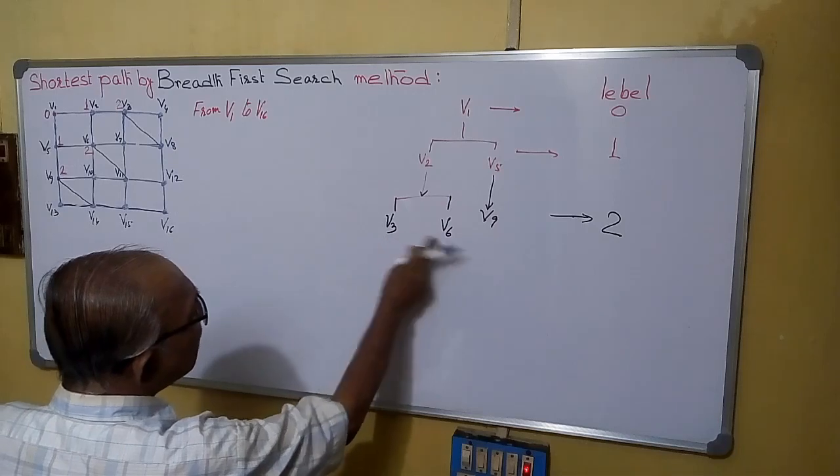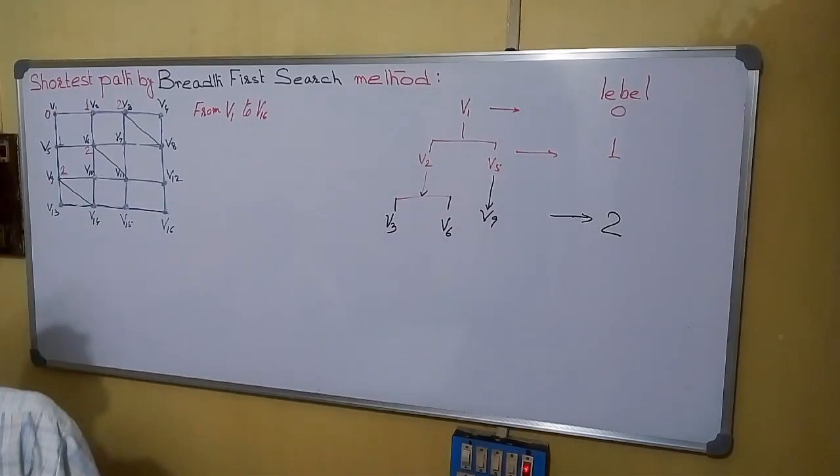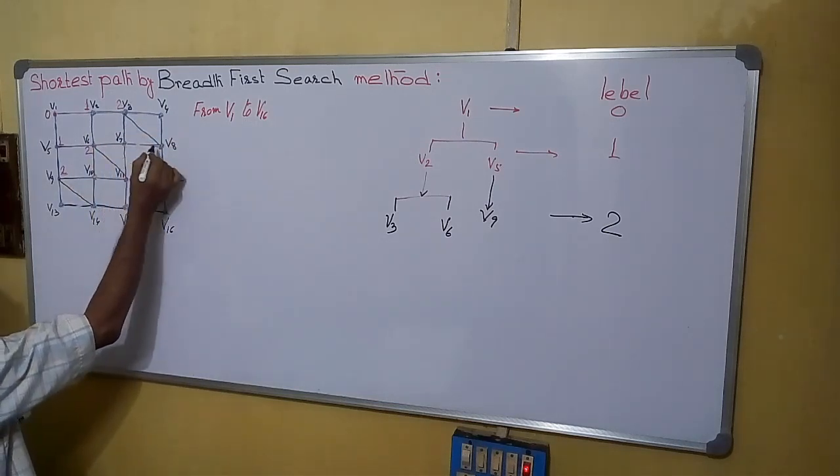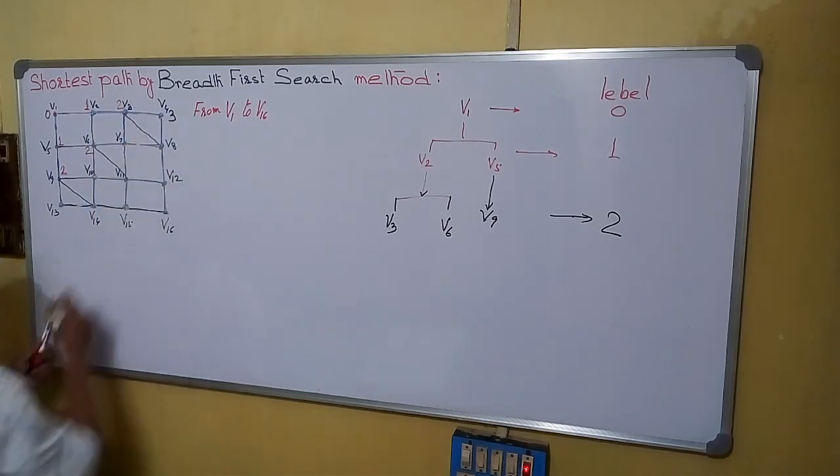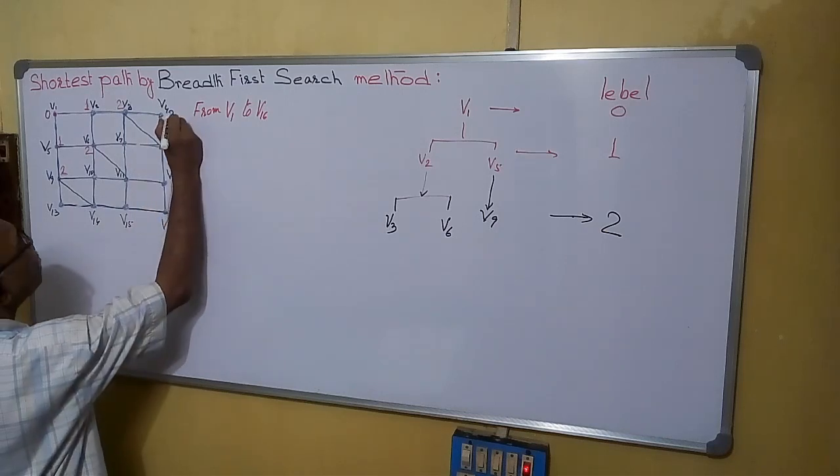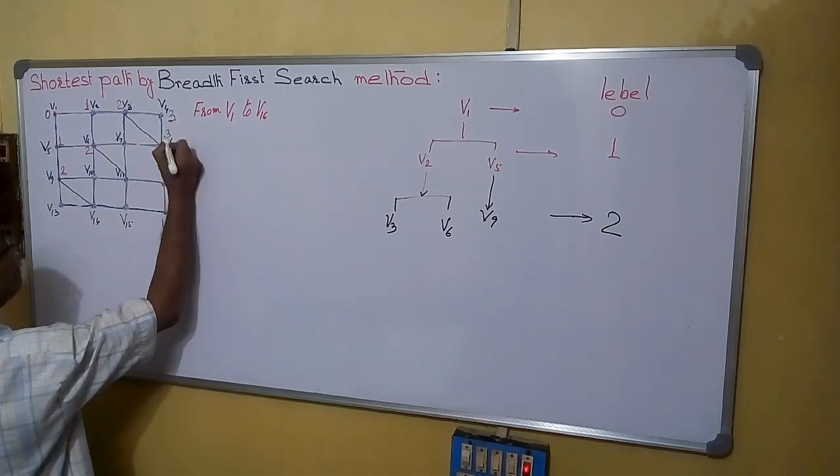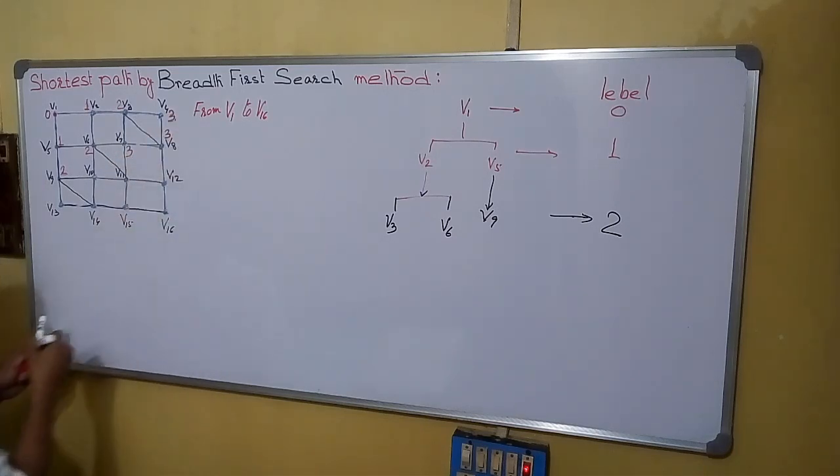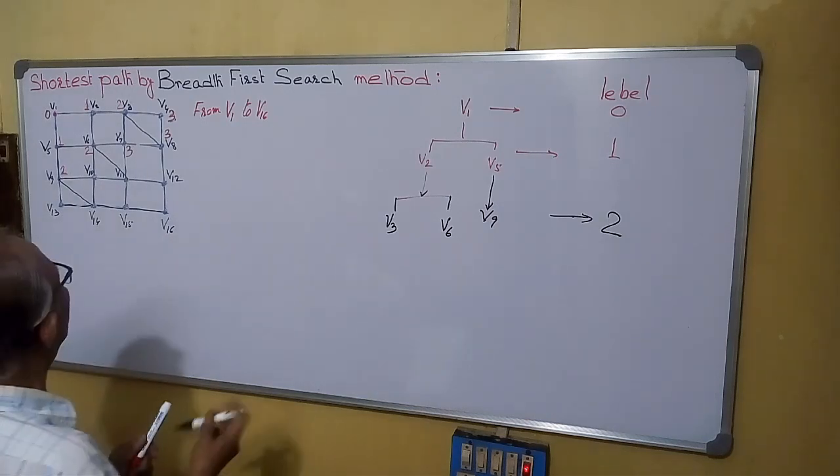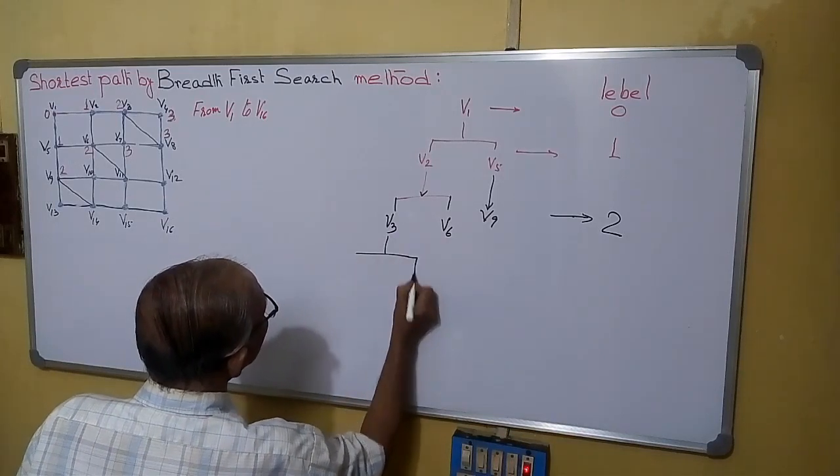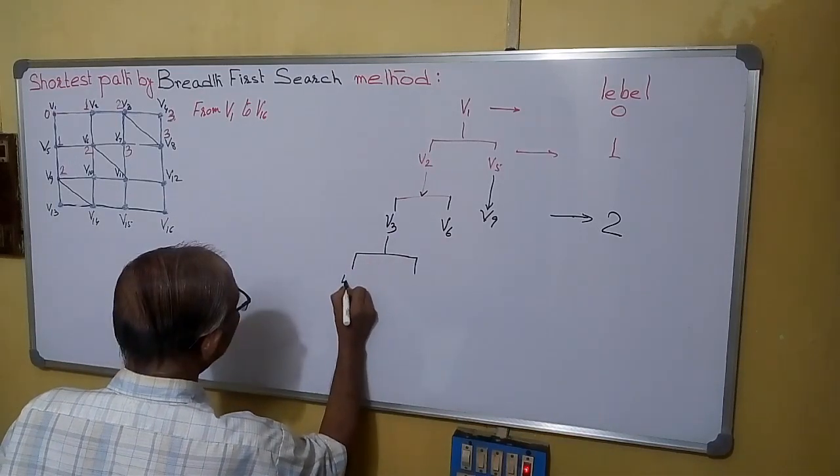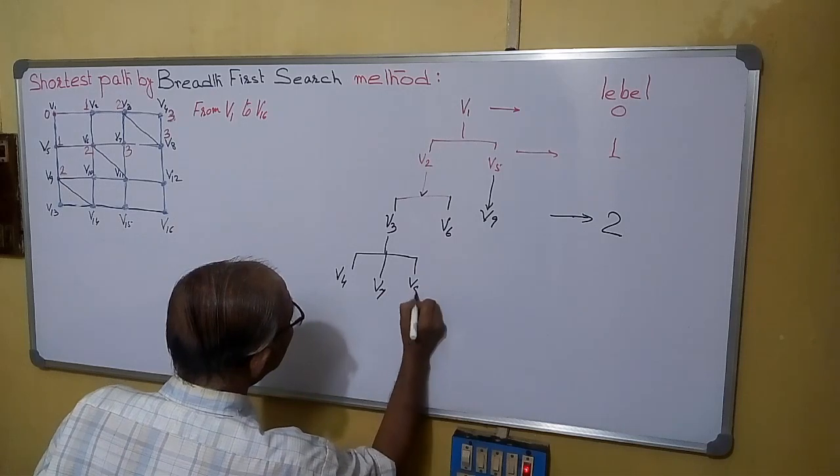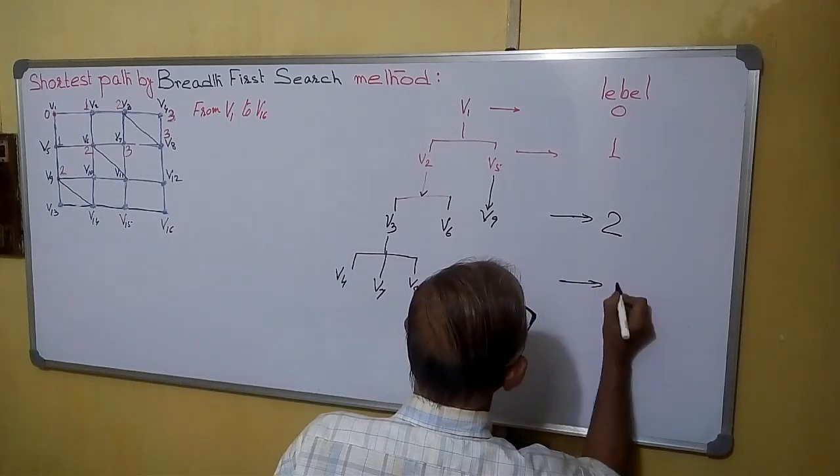Now we can start from any of these three. We can start from V3. V3, the adjacent vertices are V4, V7, V8. V2 is already there. So 2 plus 1 it will be 3. 2 plus 1 make it 3. This is also 3. This is also 3. All these vertices. So which are the vertices going from V3? This is V4, V7 and V8. All those we marked as level 3.